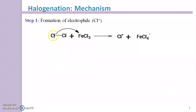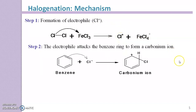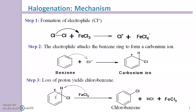Here is how chlorobenzene is formed as the substitution product. Benzene reacts with Cl2 in the presence of FeCl3 catalyst. In the first step, one chloride atom with its bonding electrons goes toward FeCl3, generating Cl+ as the electrophile along with FeCl4-. In the second step, this electrophile attaches to the benzene ring to form a carbonium ion. In the third step, loss of a proton gives chlorobenzene along with HCl and the regenerated catalyst FeCl3.